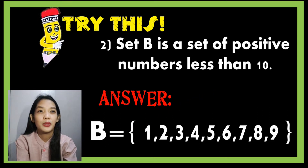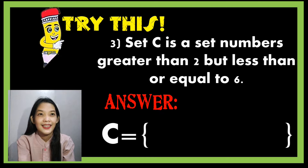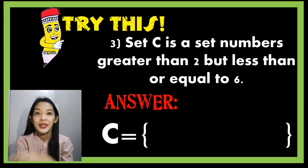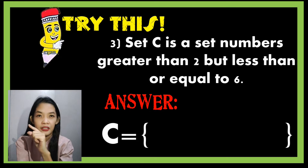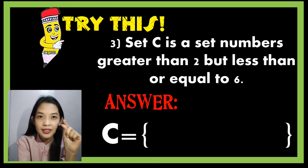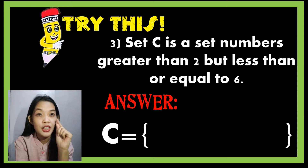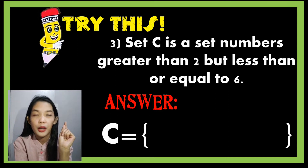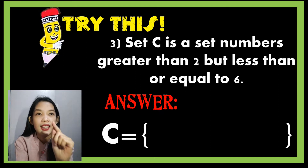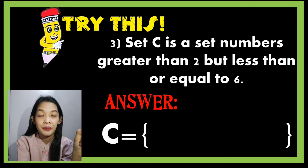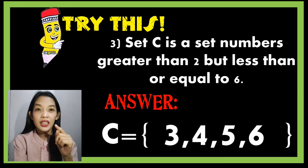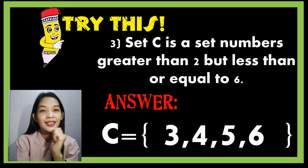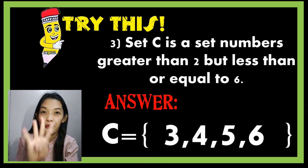Set C is a set of numbers greater than two but less than or equal to six. Numbers greater than two are three, four, five. Are we going to include six? Going back to the given problem, it says less than or equal to six, and six is equal to six, so therefore the elements are three, four, five, and six. We have four elements.